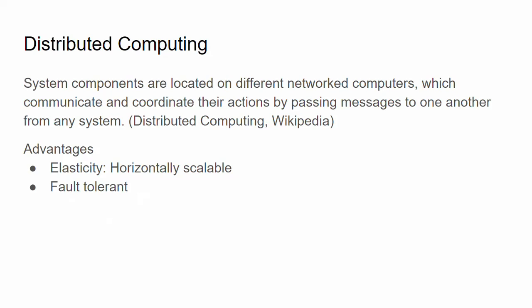Distributed computing is a design pattern where system components are located on different networked computers, which communicate and coordinate their actions by passing messages to one another. The advantages of distributed computing are that it's elastic and horizontally scalable — you can add or reduce nodes, achieving cost management and performance optimization. It's also fault-tolerant in the sense that if any node breaks down, you can replace it with a new one.